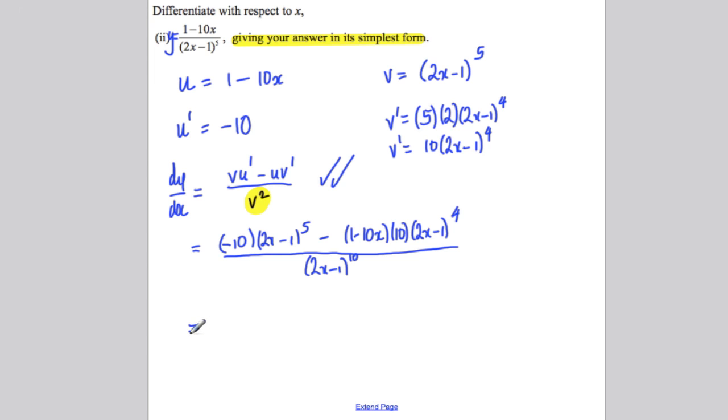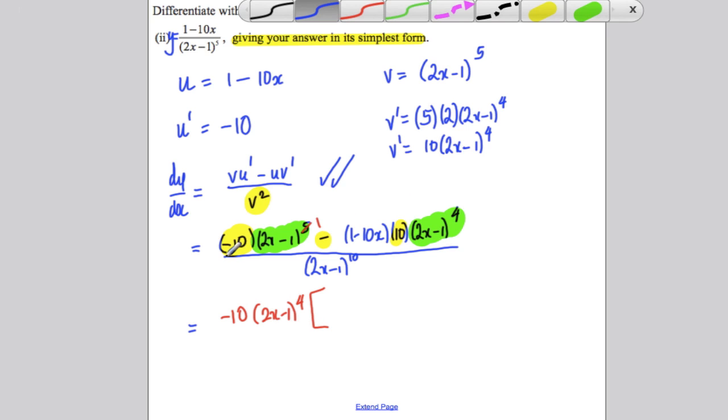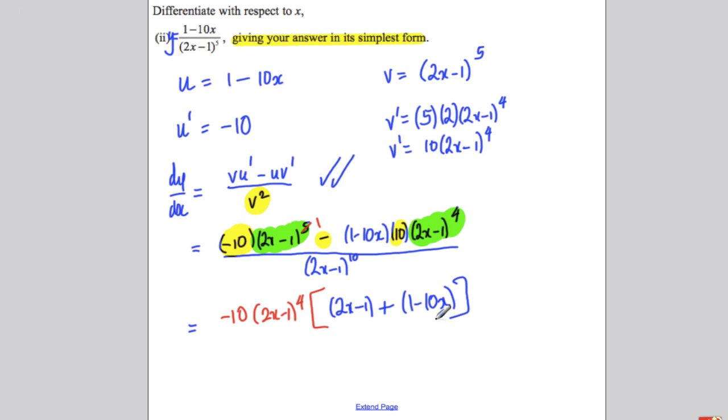Now, at this point, people didn't know what to do. Think about factorizing as it helps you. You've got a negative 10 as a factor here and here. So you could factorize out negative 10. You also have (2x - 1) to the power of 4 and (2x - 1) to the power of 5. So you could factorize out (2x - 1) to the power of 4. What would you be left with inside? Well, the negative 10 is gone and you would just have a (2x - 1) to the power of 1. You've taken out the negative, so that would be plus. 10 is gone and that's gone. You would have 1 subtract 10x, all over (2x - 1) to the 10.